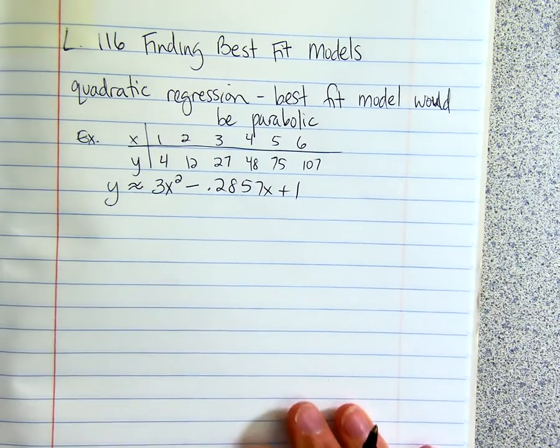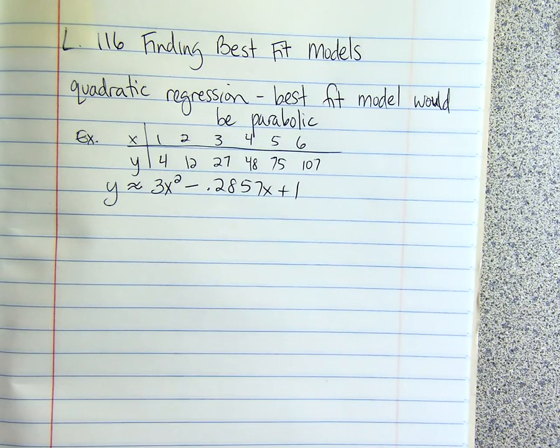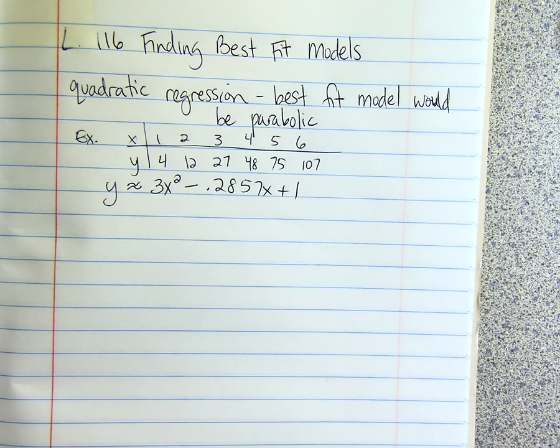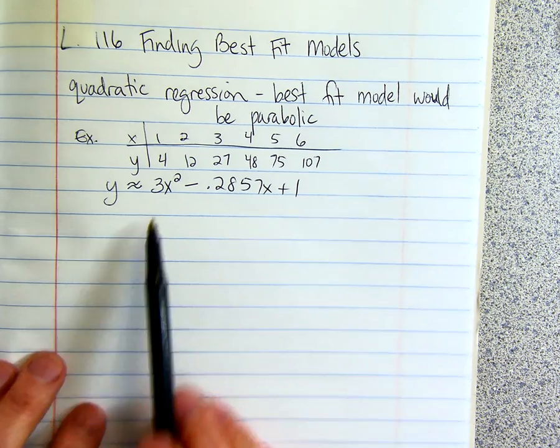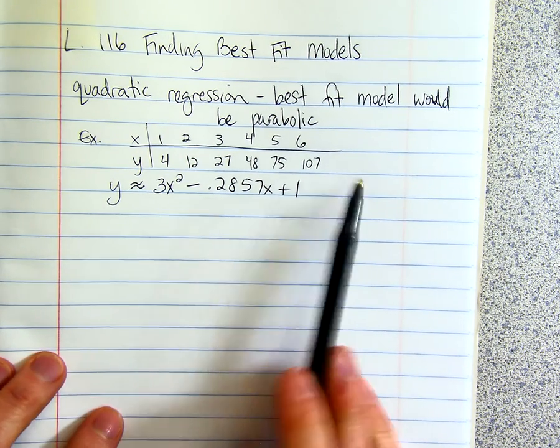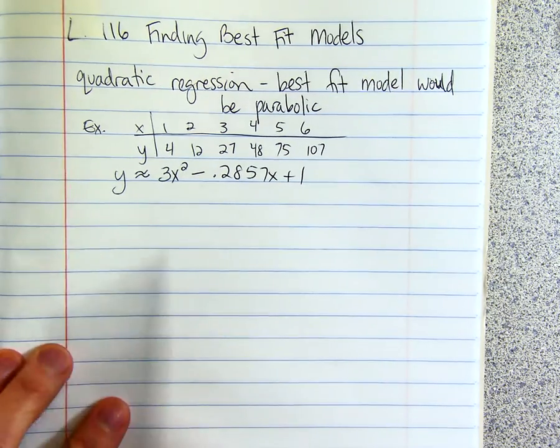And I don't know if you remember in the linear regression, it gives you like the ax plus b, and they give you the a and the b. For quadratic regression, it gives you a squared plus bx plus c. In this case, it would say a is 3, and b is this negative number, and c is 1. And then you just plug it in.